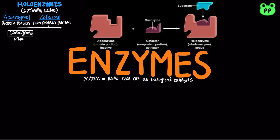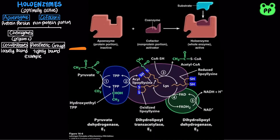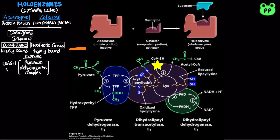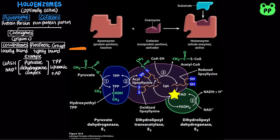Organic cofactors are known as coenzymes, which can either be loosely bound as co-substrate or tightly bound as prosthetic group. For example, the enzyme pyruvate dehydrogenase complex, which catalyzes the oxidative decarboxylation of pyruvate to acetyl-CoA, involves the co-substrates coenzyme A and NAD+, and the prosthetic groups thiamine pyrophosphate or TPP derived from vitamin B1, as well as lipoamide and FAD.